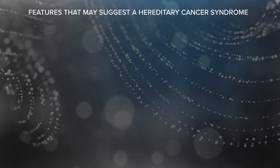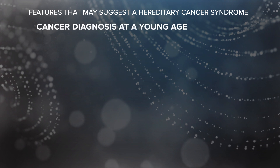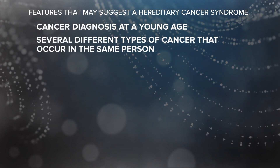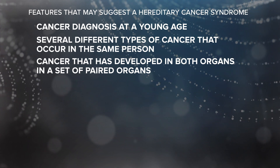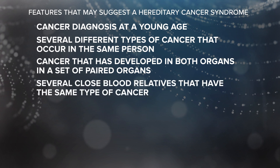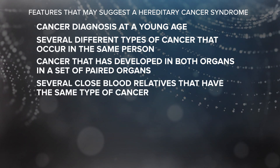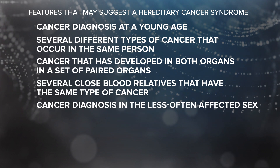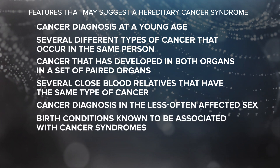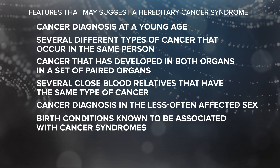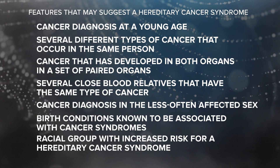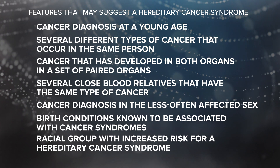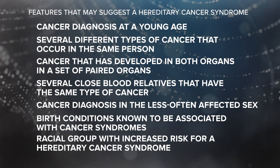The features of a person's personal or family medical history that may suggest a hereditary cancer syndrome include: cancer diagnosis at a young age; several different types of cancer that have occurred in the same person; cancer that has developed in both organs in a set of paired organs, such as both kidneys or both breasts; several close blood relatives that have had the same type of cancer; cancer diagnosis in the less often affected sex; the presence of birth conditions such as skeletal abnormalities known to be associated with inherited cancer syndromes; and being a member of a racial or ethnic group known to have an increased chance of having a certain hereditary cancer syndrome, such as the Ashkenazi Jewish population for BRCA1 or 2.